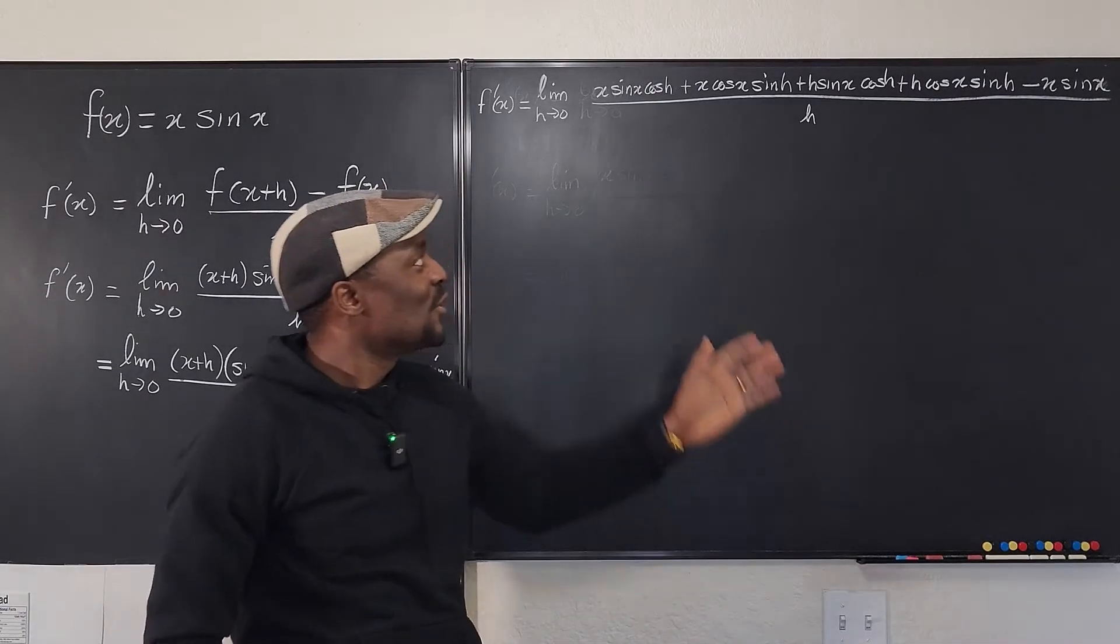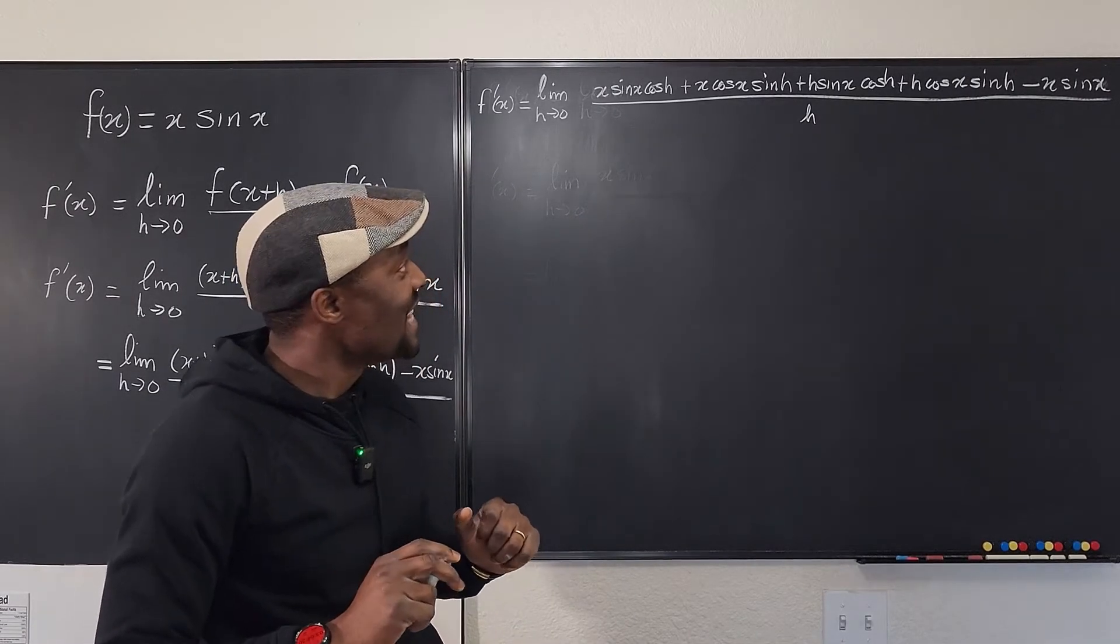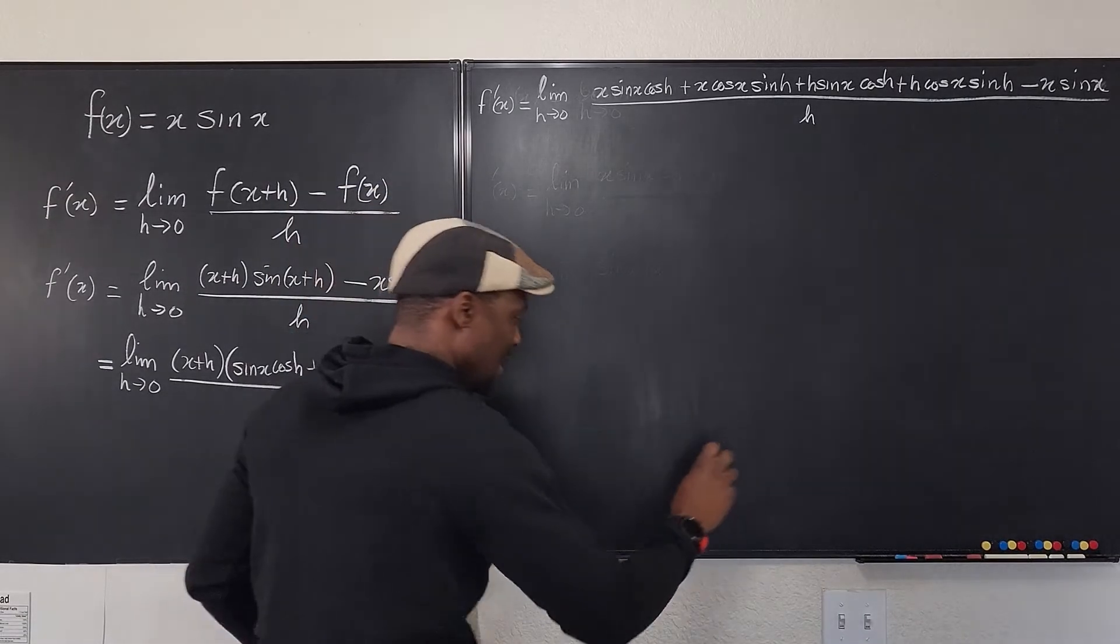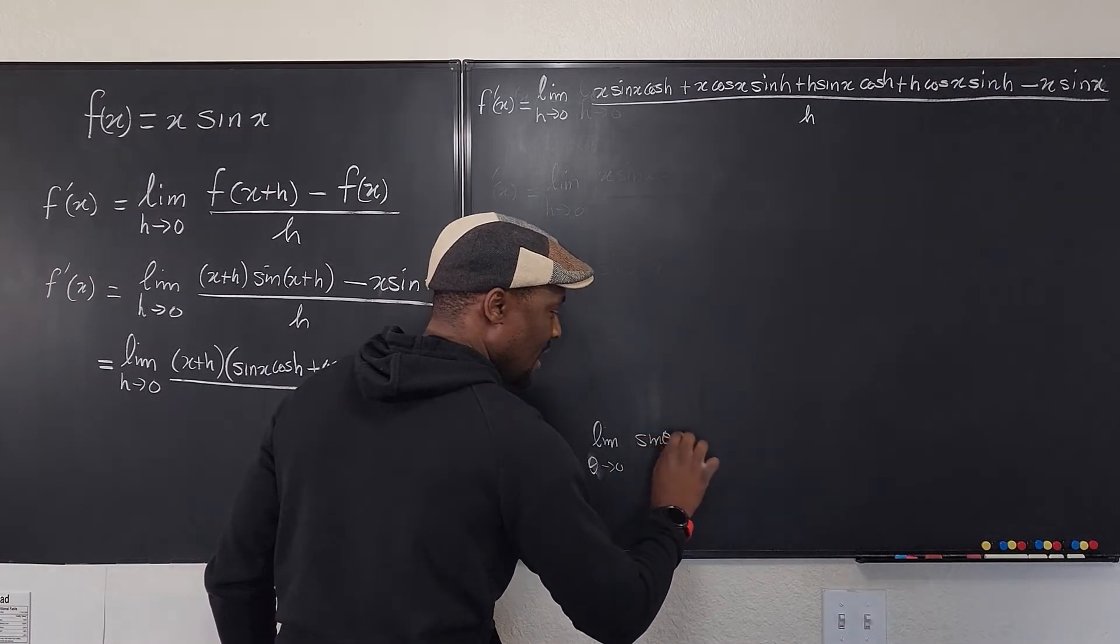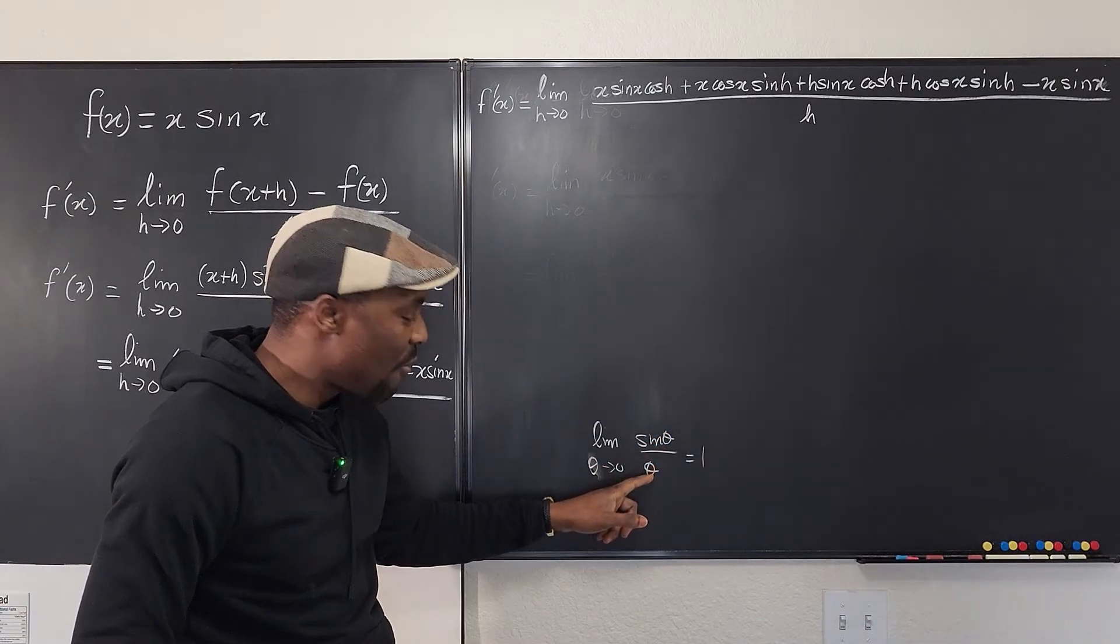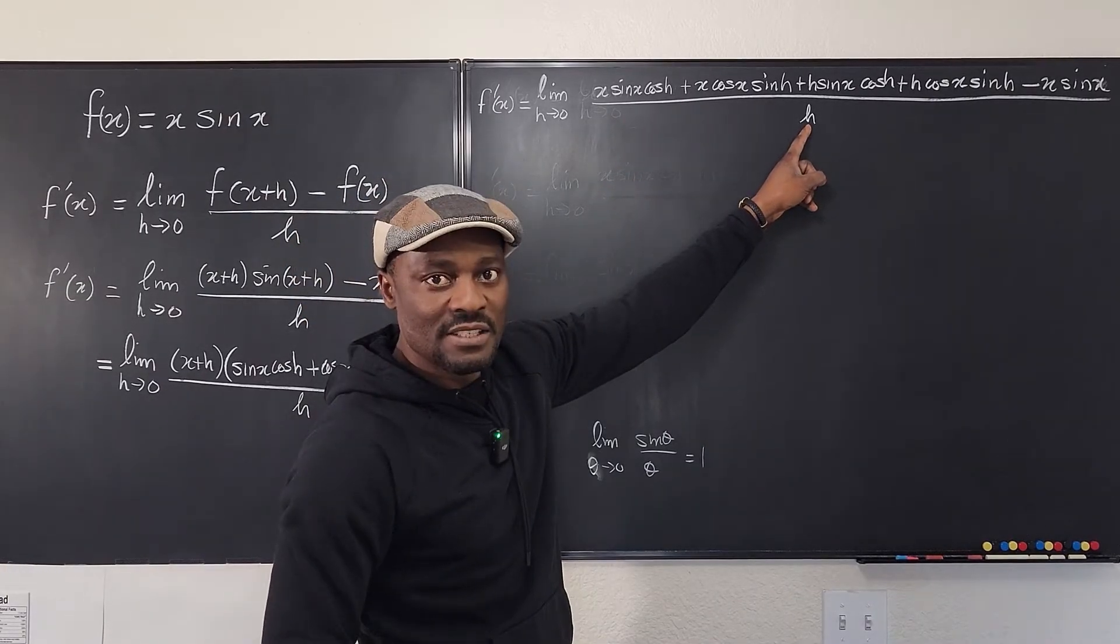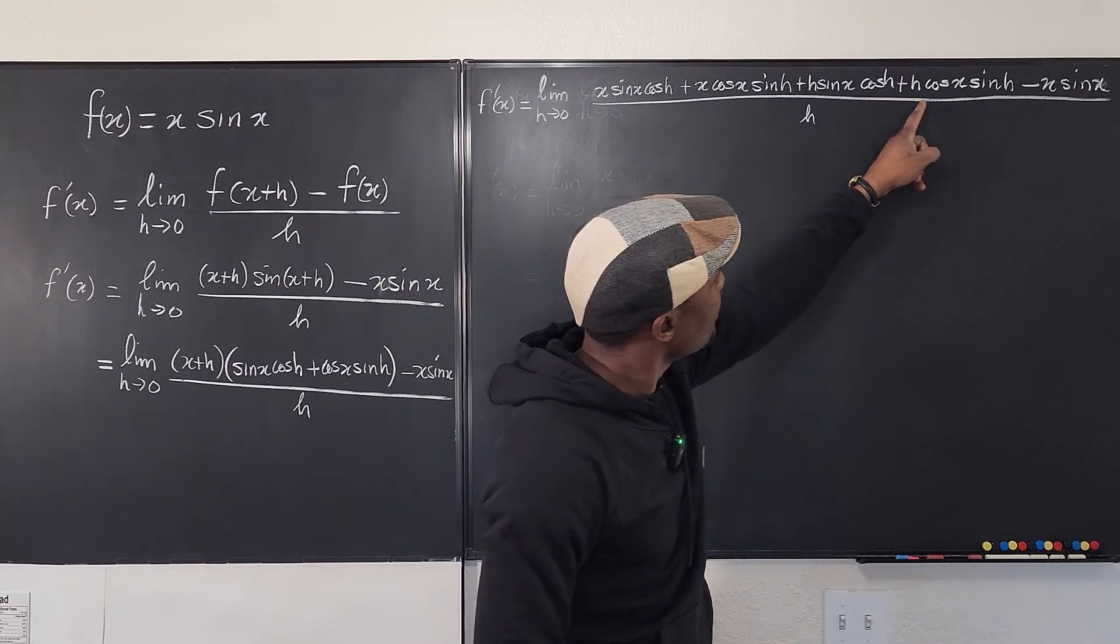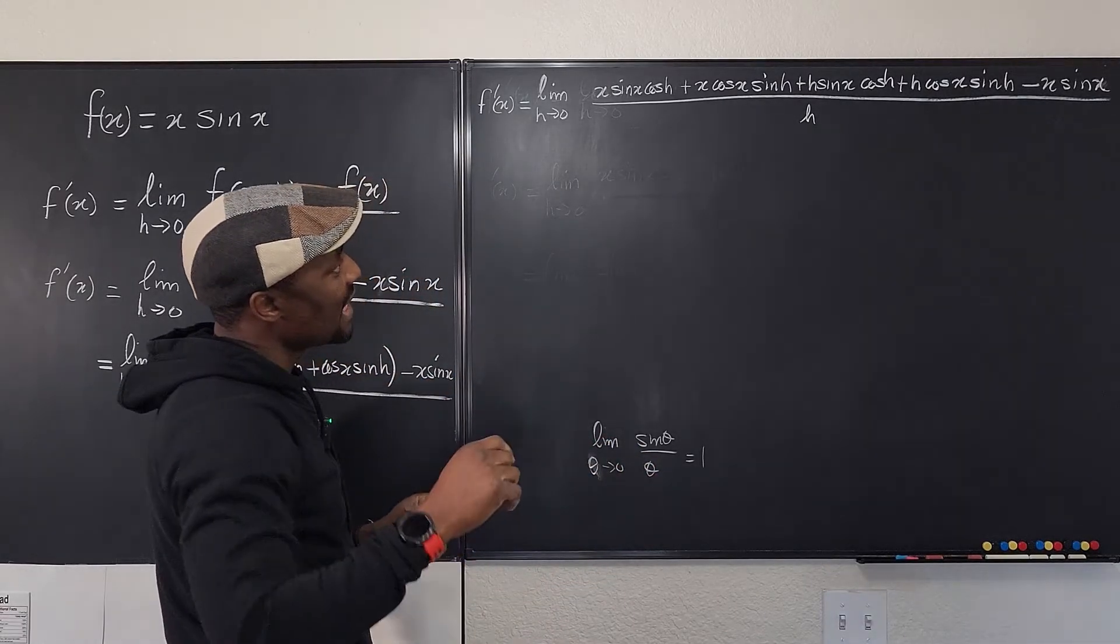Now what's the strategy here? Should I simplify the top first before I do what I want to do? For now, what I want to do is look for which portions of this will help me use this. Look at this. Remember the limit as h goes to zero of sin h over h will be equal to one. So what I want to do first is everything that has sin h on top, I want to deal with it first because that way I can say they all go to one. And then I can deal with the rest later.